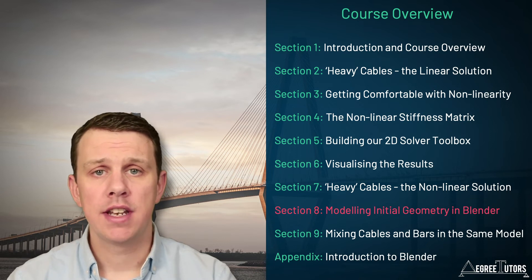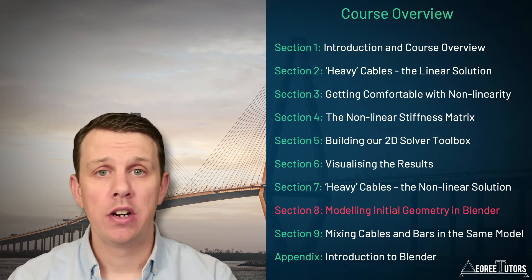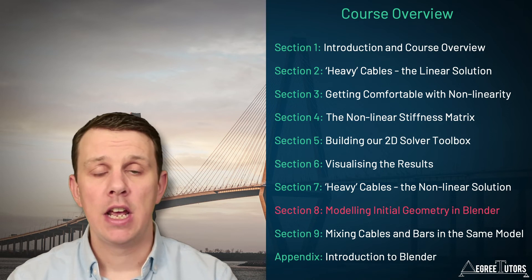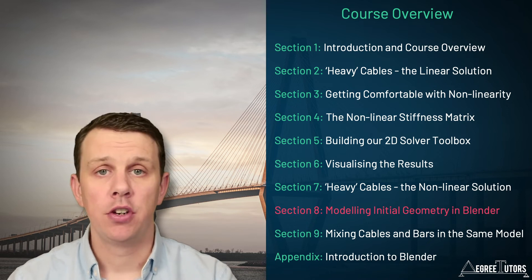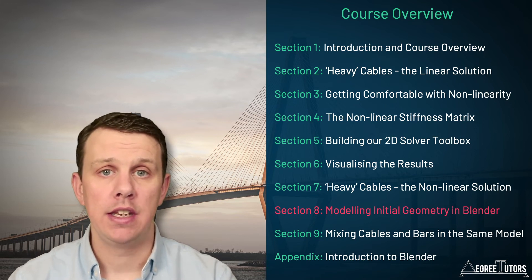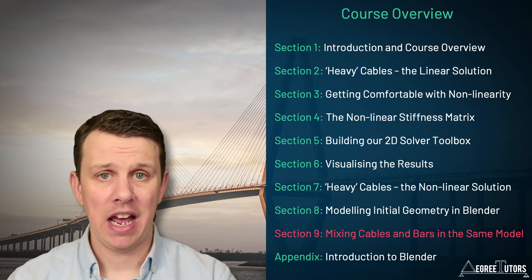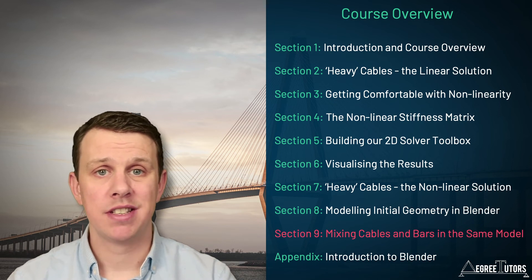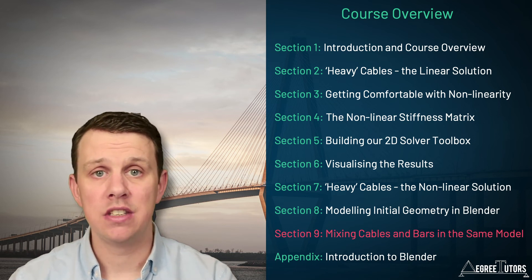Section seven acts as a validation of sorts for our code up to that point. In section eight we're going to take a break from pure coding and detour over to Blender — the open-source modeling tool we're going to use to generate our structural geometry. If you've taken Degree Tutors courses before you'll be fairly familiar with Blender, but if you're completely new to it I've included an appendix section at the end of the course to help you get set up. In the final section of the course we're going to expand our solver to analyze structures that consist of both bar elements — which can resist tension and compression — and cable elements, which can resist tension only.